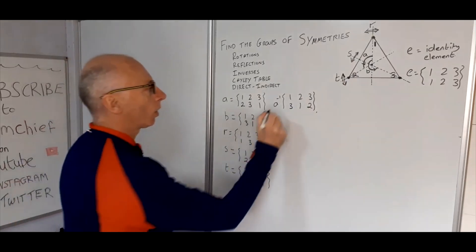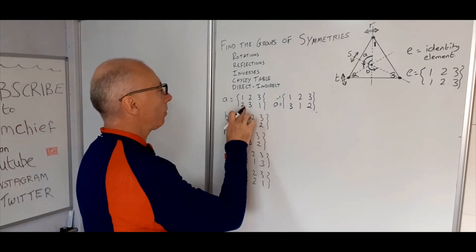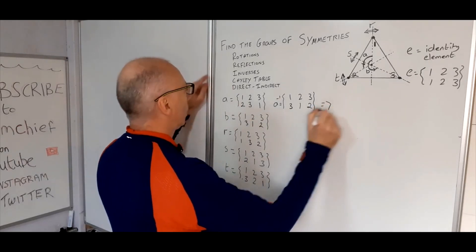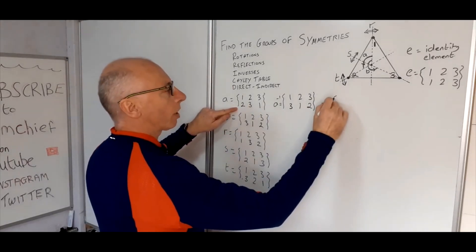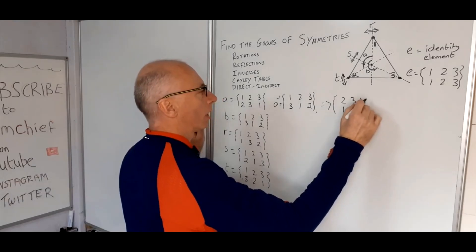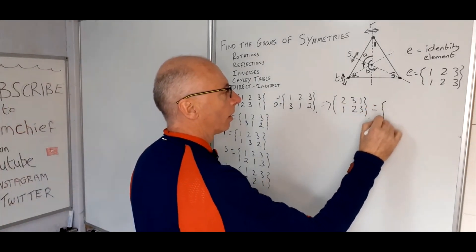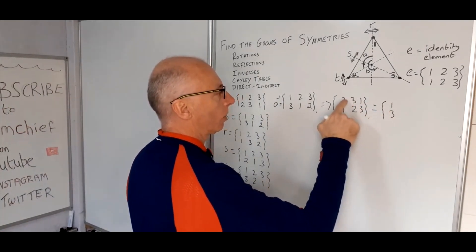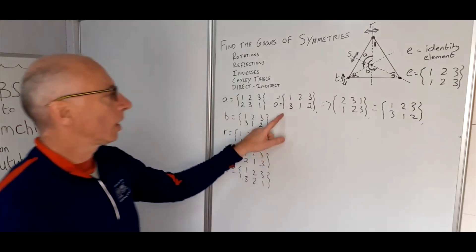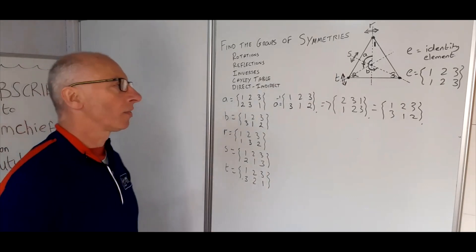There's another way to find the inverse algebraically: flip the two-line permutation upside down. Writing two, three, one on the top line and one, two, three on the bottom, then rearranging into numerical order on top gives us one goes with three, two goes with one, and three goes with two — which is exactly the same result as the physical undoing method.